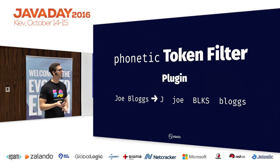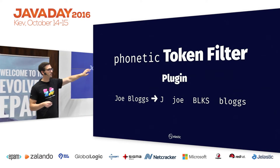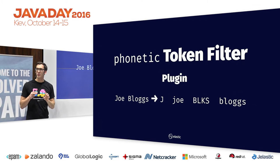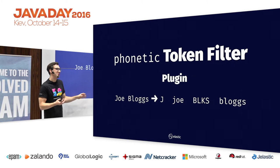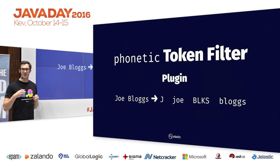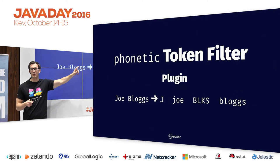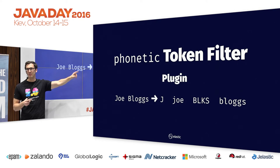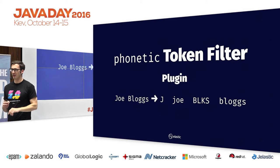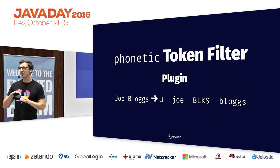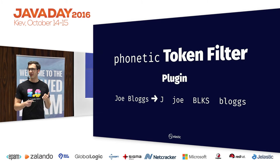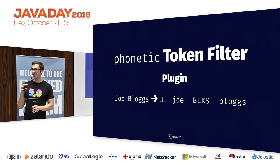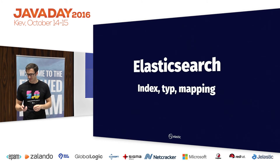There is also a phonetic token filter. If you have a name like 'Joe' and people don't know how to actually spell it — it could also be 'J-o' from the spelling — all of these pronunciations would then be indexed and all these terms could be found. This is only a plugin, not available by default. But if you have absolutely no idea how to spell something and just have the pronunciation in your head, with the right plugin all these pronunciations can be found and stored for you.